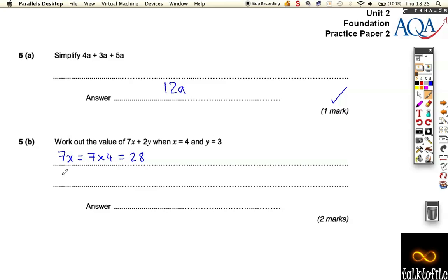And if I work out what 2y is, that's 2 times our value for y, in this case is 3. That makes 6. For getting any one of those, that would be a mark. And then you do 28 plus 6 added together, it's going to give you 34 for the second mark.